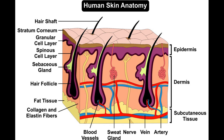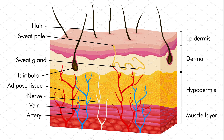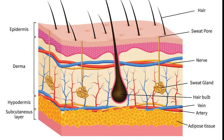As daughter cells move up the strata, they change shape and composition as they undergo multiple stages of cell differentiation to eventually become anucleated. During that process, keratinocytes become highly organized, forming cellular junctions called desmosomes between each other, and secreting keratin proteins and lipids which contribute to the formation of an extracellular matrix and provide mechanical strength to the skin.